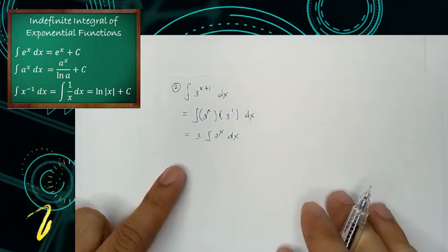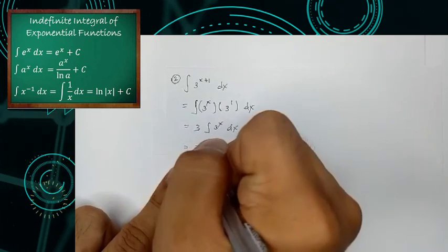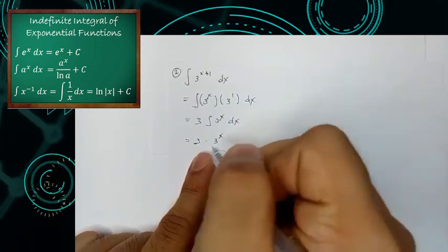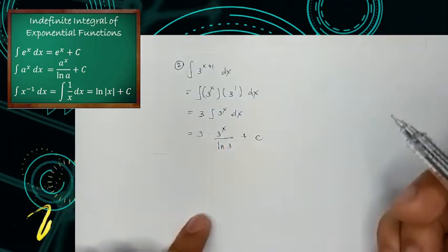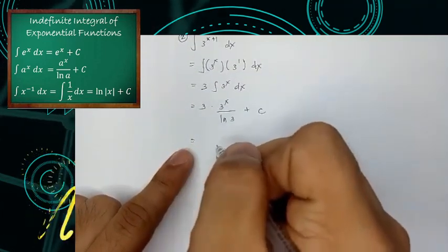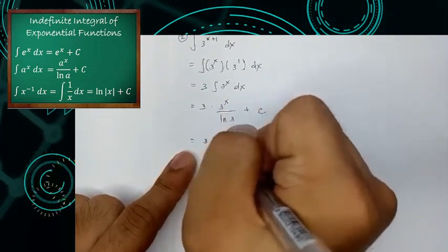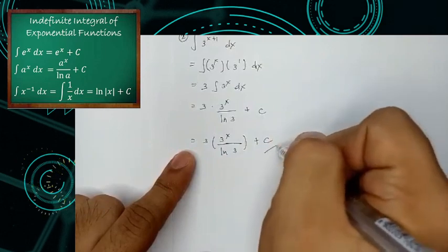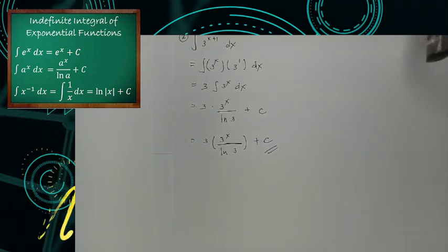Applying our rule — the second rule — we simply copy our base. So we have 3 times 3 raised to x, all over the ln of the base, which is 3, plus C. Simplifying further, our final answer is 3 times 3 raised to x over ln(3) plus C. This is our final answer using the second rule for the exponential function.